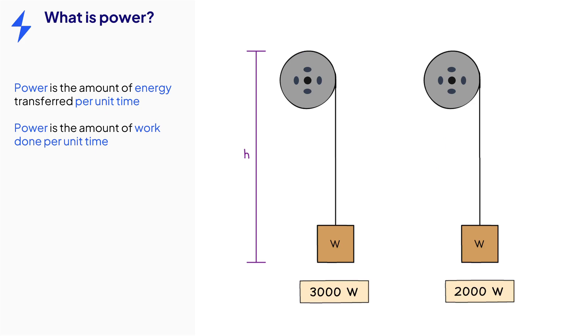Or the left hand motor can lift the same weight higher than the right hand one in the same amount of time because it can do more work on the weight in that time.